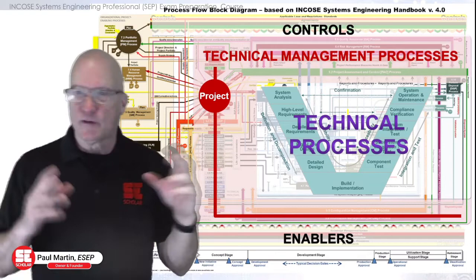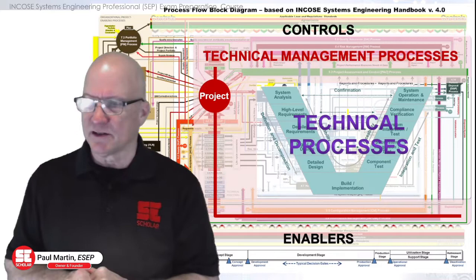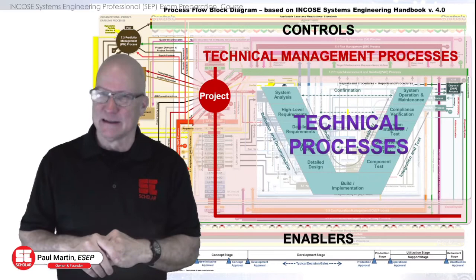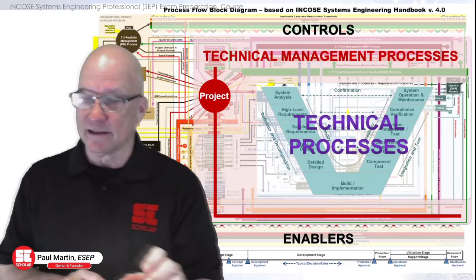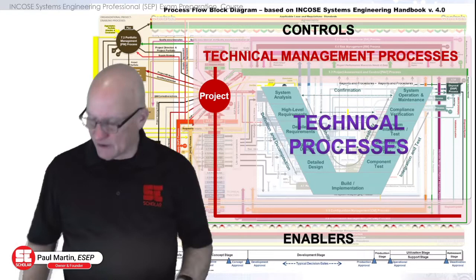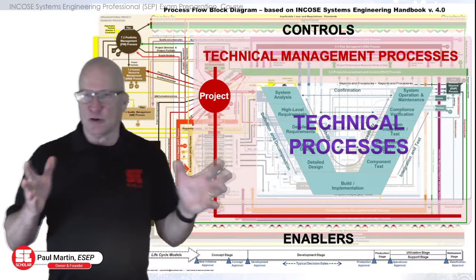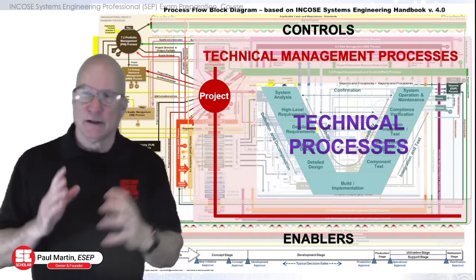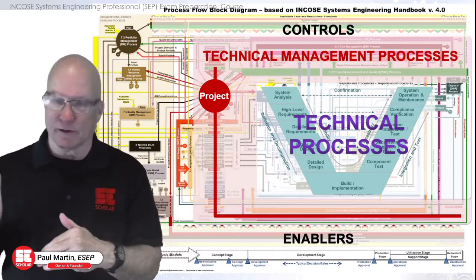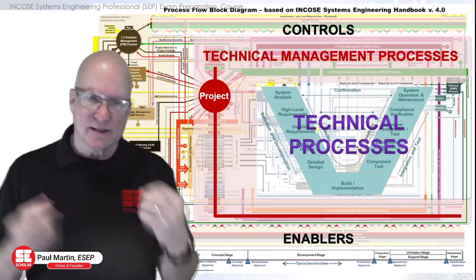If you look at the technical management processes, they're actually program management processes — similar to what you'd see from PMI. When we get to those, it'll be fairly straightforward to understand from a systems engineering standpoint. How do these technical management processes support the technical processes? A good example is configuration management: it helps you keep track of all the data you're creating and the baselines you're making as you go through design, verification, and validation. So it's a separate process, but it supports the technical processes.